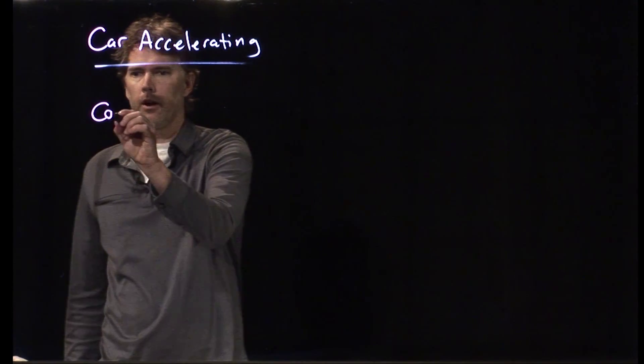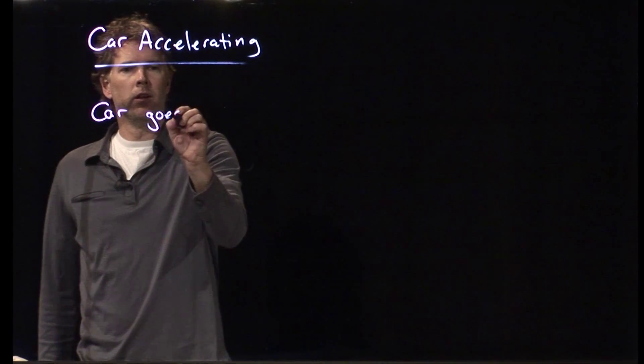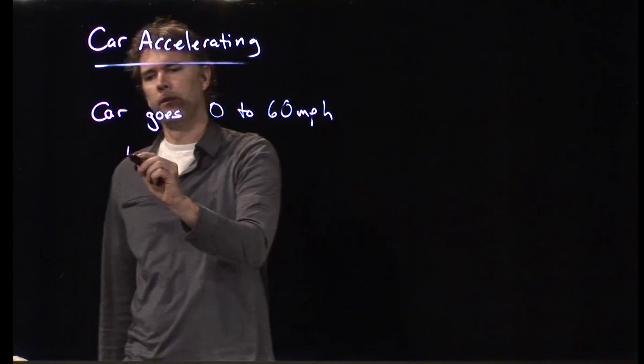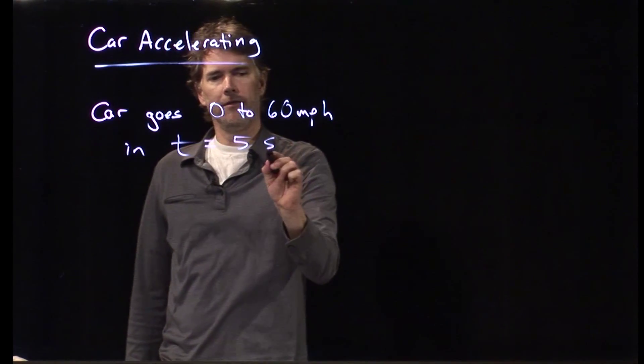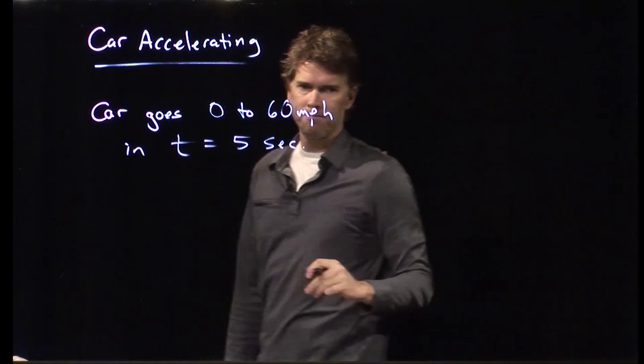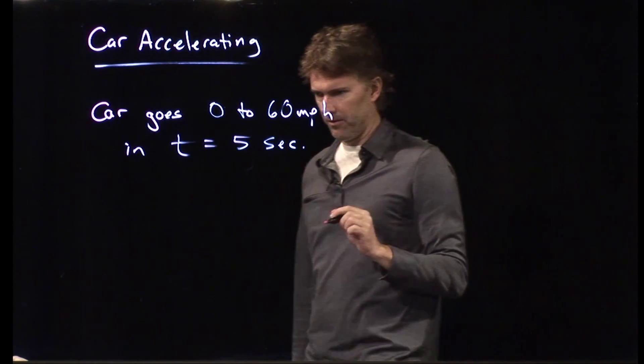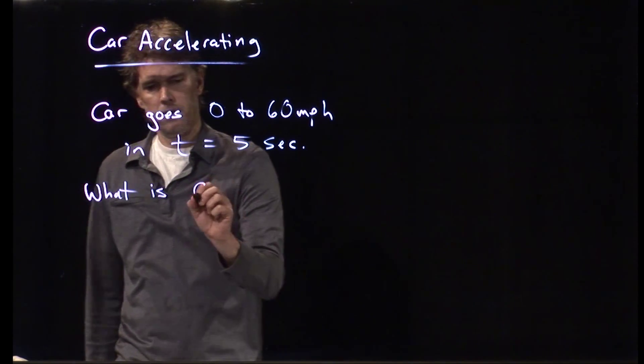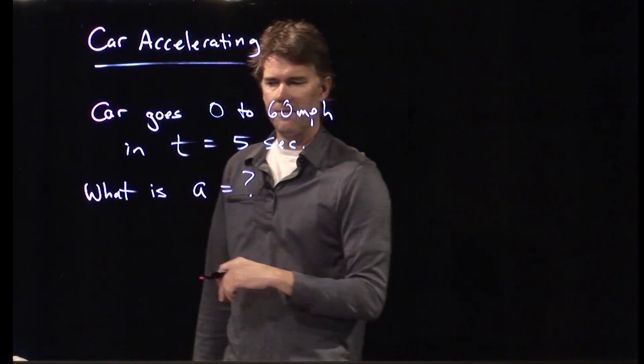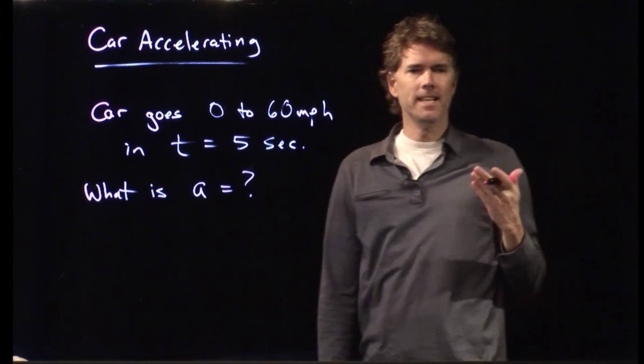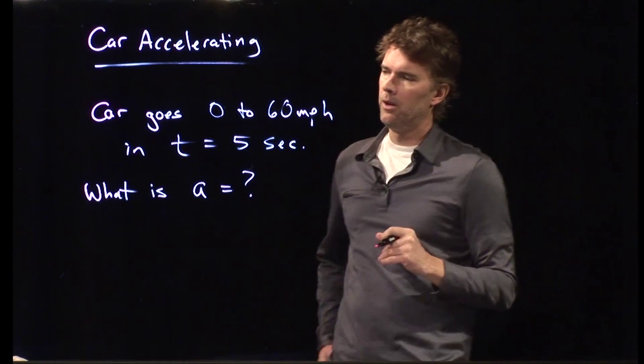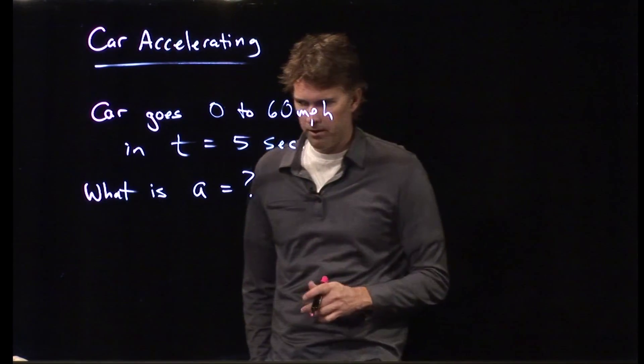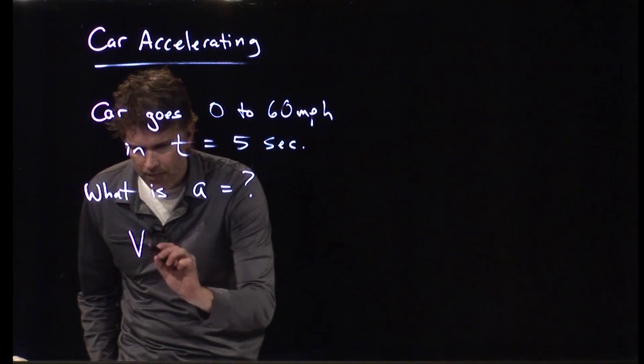So, a car goes 0 to 60 miles per hour in a time of five seconds. Let's ask the following question: what is the acceleration? What is that acceleration equal to based on these numbers? Well, how would we figure this out? Yes, it's going to be one of the kinematic equations. Let's take a look at this one.